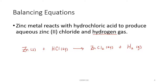Now we're going to place our coefficients to balance this. Notice on the product side we have two hydrogens, so we can put a 2 out in front of our HCl. On the left-hand side we have one zinc, and we also have one zinc on the right. This 2 out in front of HCl applies to both the hydrogen and the chlorine, so we have two chlorines on the left and two on the right. Everything is balanced — ones out in front are just assumed.